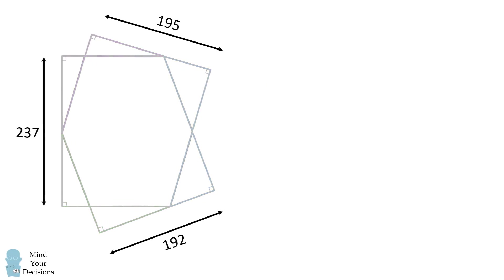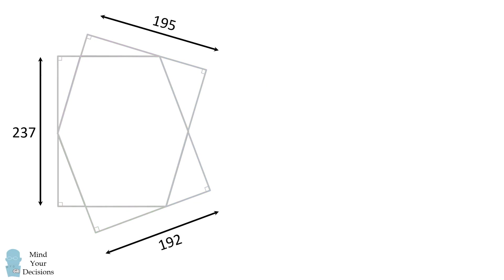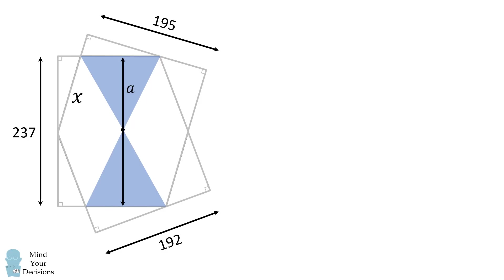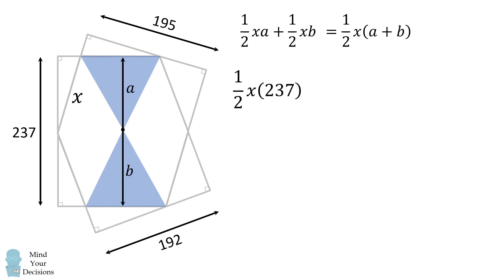Before we go further, let me preview the final calculation. Suppose the hexagon has a side length equal to x. Take a point in the interior and consider two triangles with heights a and b. The areas of these two triangles will be one-half x times a plus one-half x times b, which equals one-half times x times the quantity (a + b). Since a plus b equals 237, the sum of these two areas will be one-half multiplied by x multiplied by 237.